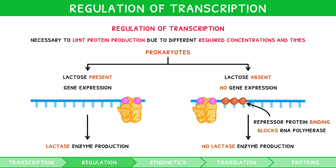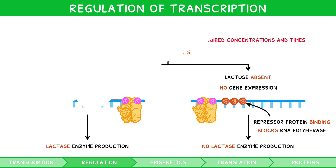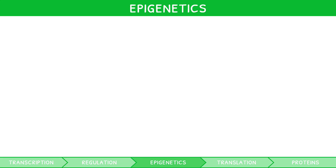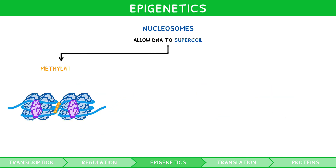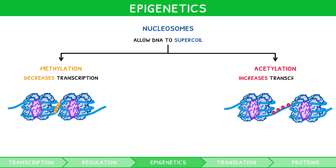The direct regulation of transcription is one method by which gene expression is controlled. However, for your higher-level IB Biology exam, you also need to recognise the indirect regulation of the environment on transcription, specifically within eukaryotes, known as epigenetics. The structure of nucleosomes was introduced in the first video of this series, but we only mentioned their role of supercoiling. Through alteration of their histones, nucleosomes can move closer or further apart, thereby altering the ease of transcription and thus controlling gene expression. These alterations can occur in several ways: addition of a methyl group, which is generally considered to decrease transcription; addition of an acetyl group, which is generally considered to increase transcription; and addition of a phosphate group, which has variable effects.